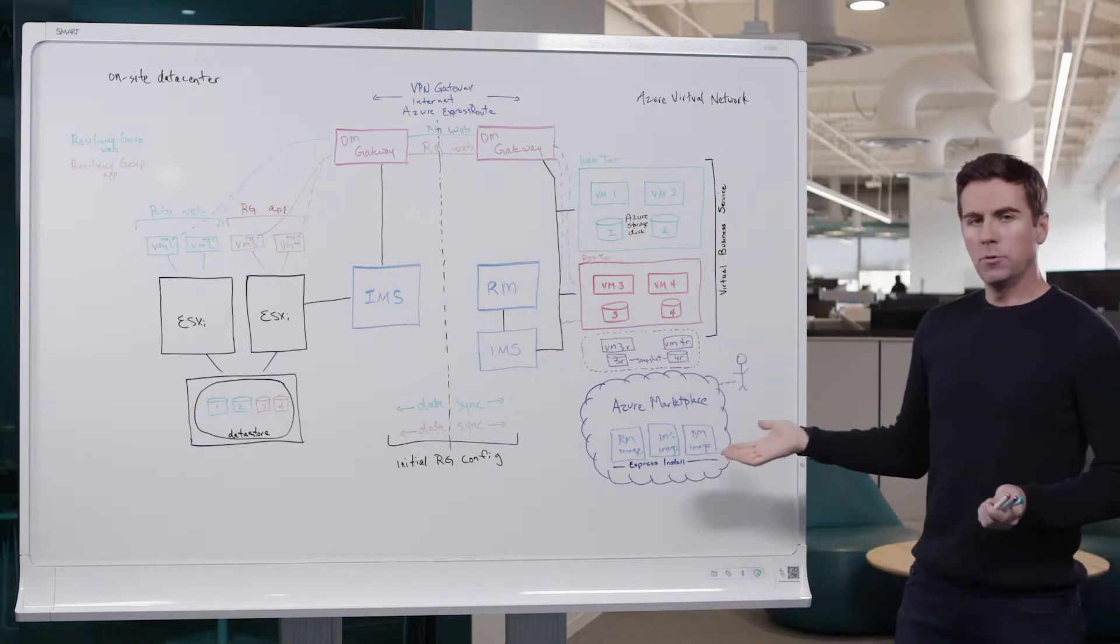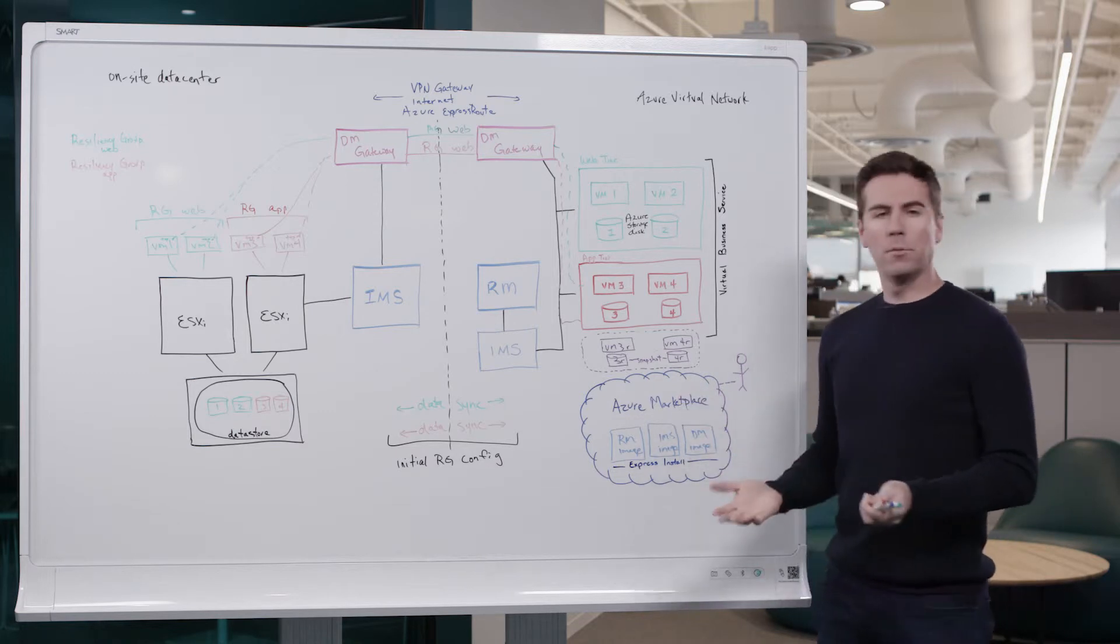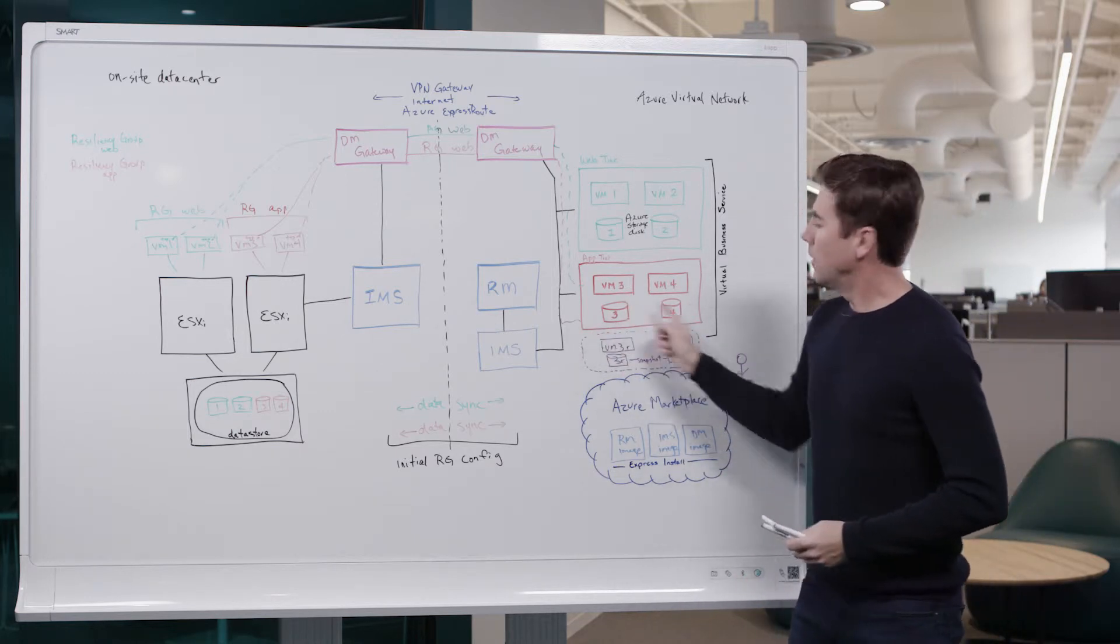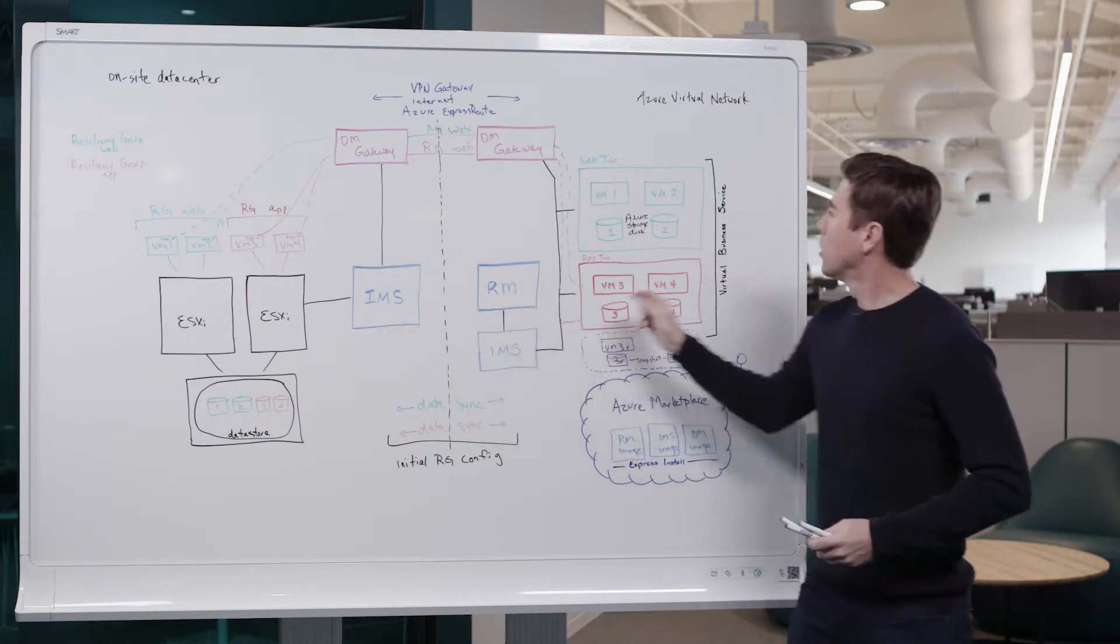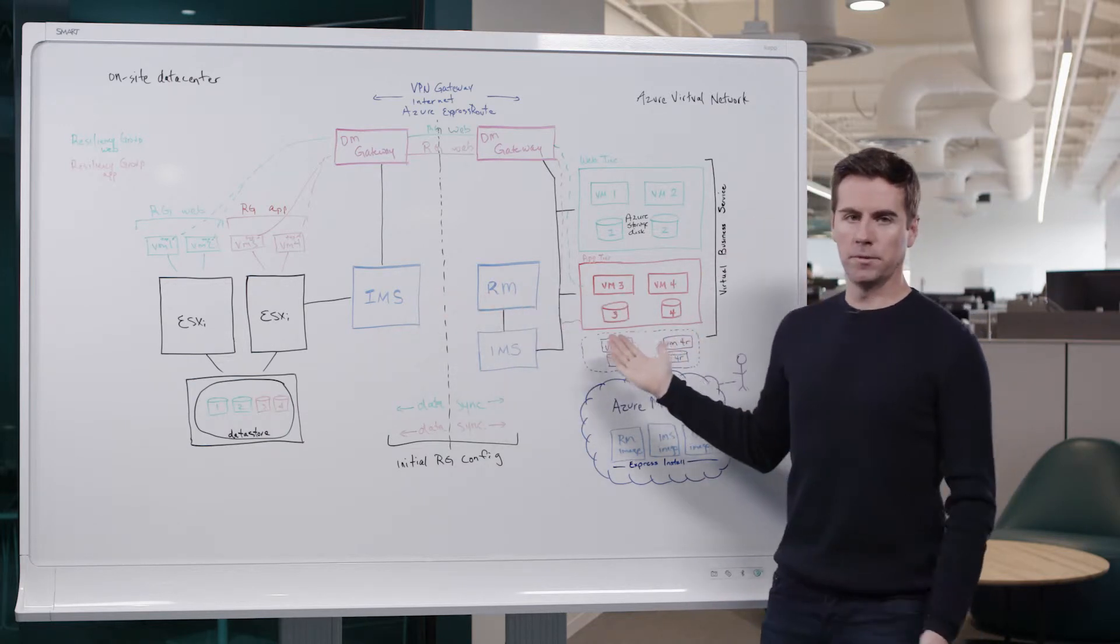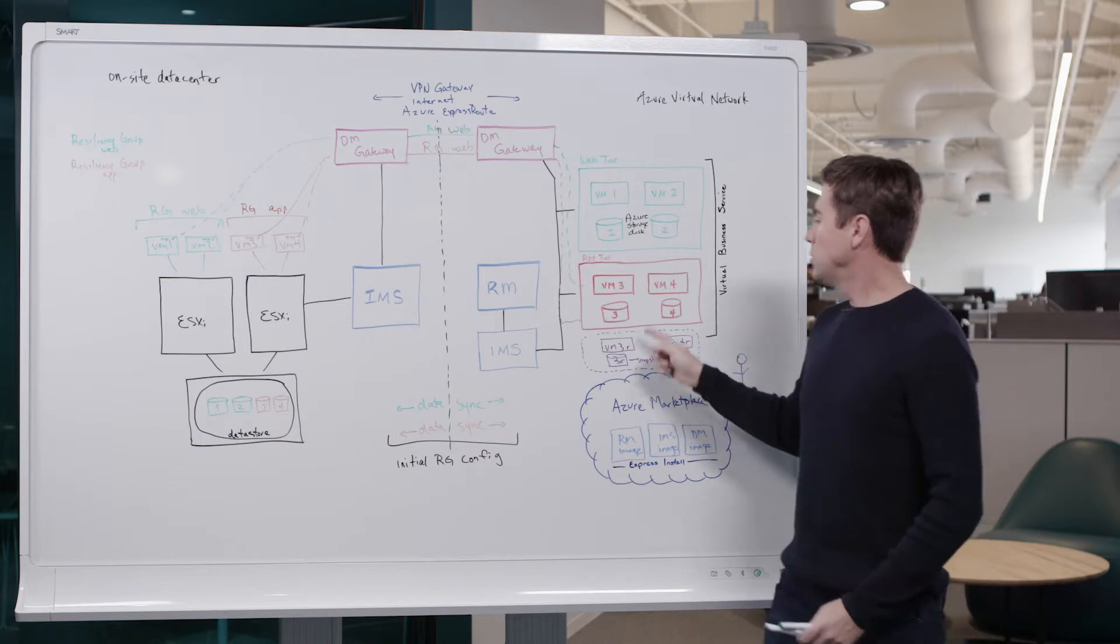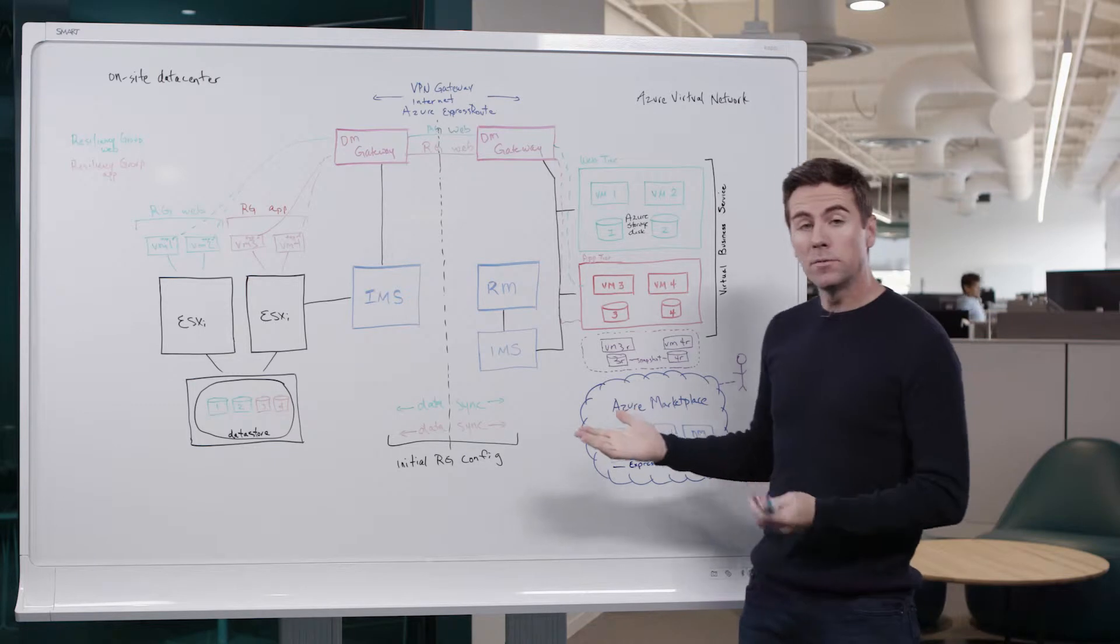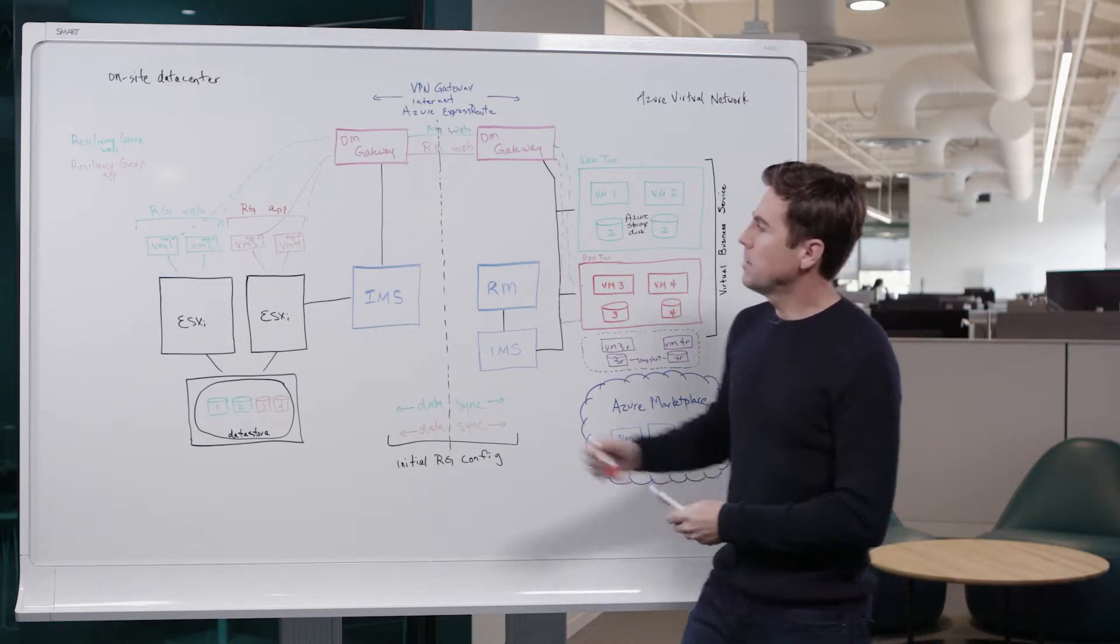So another thing that we can do with resiliency platform is something we call a DR rehearsal. This is where we can use a snapshot of the data that's been replicated from our on-site data center into our Azure virtual network, and we can use a snapshot to bring up temporary systems within the Azure cloud that can be used for testing purposes.